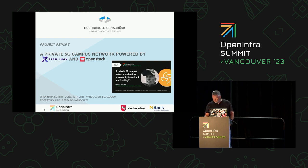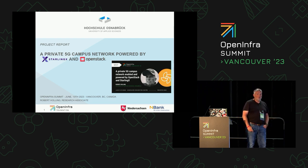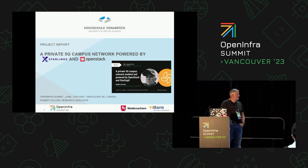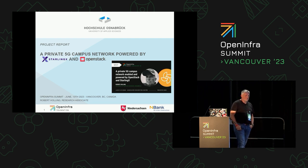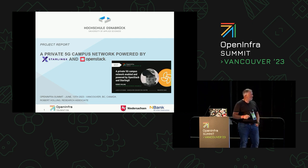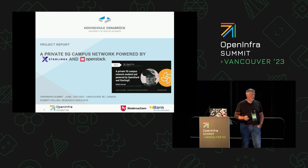So it's a quarter to two. Hopefully you enjoyed your meal, your lunch. My project report for today is about our private 5G campus network, titled 'Powered by StarlingX and OpenStack.' It is more than a preview of what we are planning to do, less than we already did, and more an overview of the project than a technical deep dive. My name is Robert Holling. I'm a research associate from the University of Osnabrück of Applied Sciences.